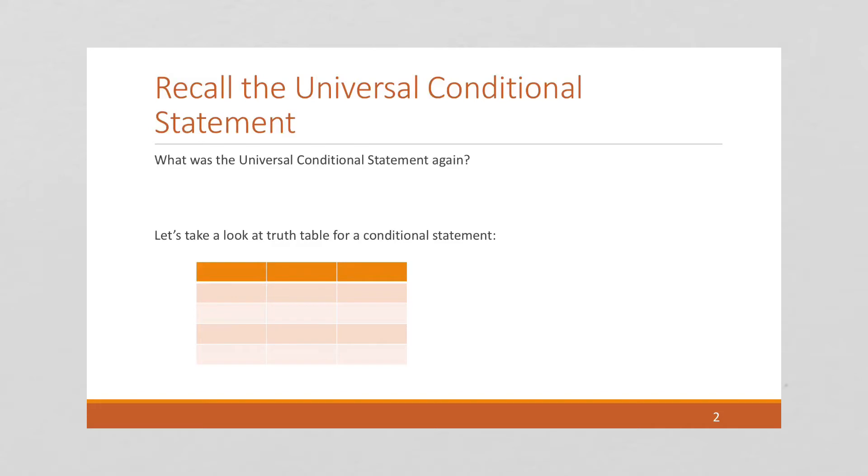If we recall, a universal conditional statement has this form: for all x in some domain, some property of x, if it's true, implies that some property q of x is also true.